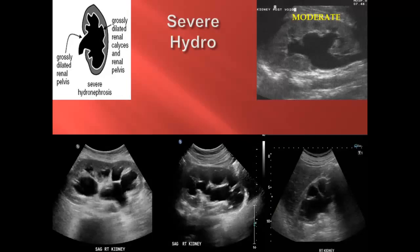Please take a moment to review the spectrum of severe hydronephrosis. Recall the features of severe hydro: complete obliteration of the renal sinus and the medullary pyramids by the anechoic bag of urine, and variable degree of cortical thinning.